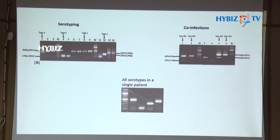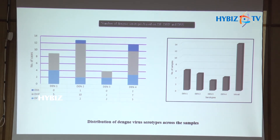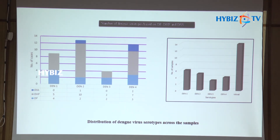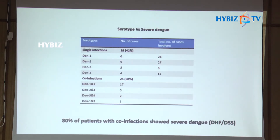In one patient, we identified all 4 serotypes simultaneously. We then carefully analyzed the data to determine which serotype was causing more DHF and DSS. Serotypes 1 and 2 showed the most severe forms of disease. When looking at co-infections specifically, the mixed infection group showed nearly 80 percent DHF. So 80 percent of patients with co-infection showed severe disease.